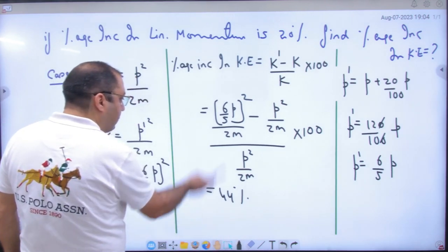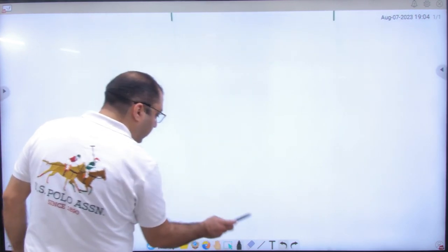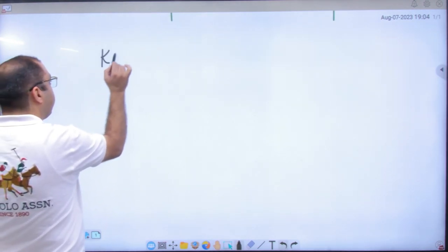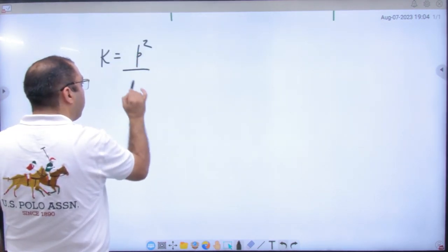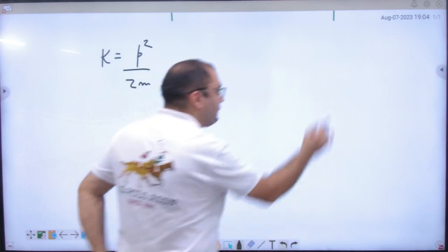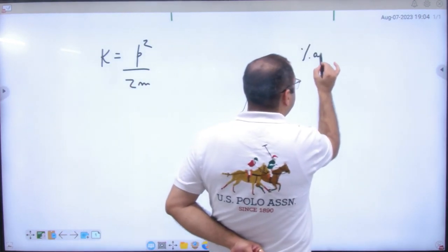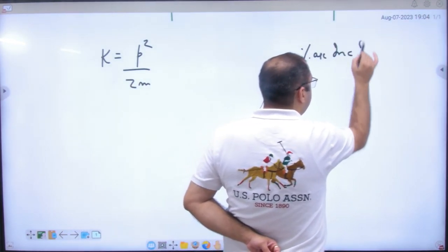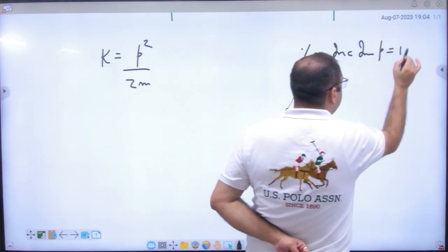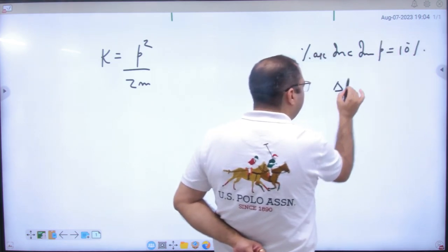Nahi bane to yeh answer to phir bhi kar nahi hai baat khatam. Par at least aapke do options eliminate to pakka karega. Kaise? Aap ek kaam karein, shortcut mein kya karein? Kinetic energy is equal to p square by 2m likhein. Aapko kya given hai? Percentage increase in momentum kitna? 10%. Aise likh do.